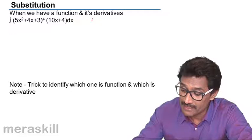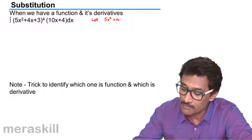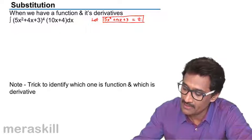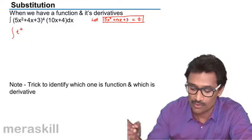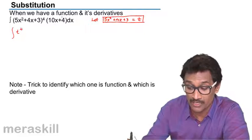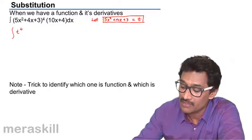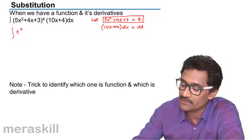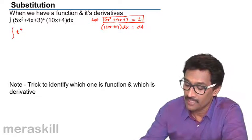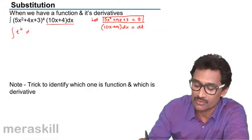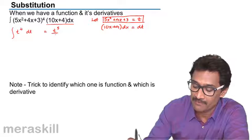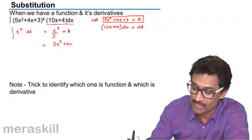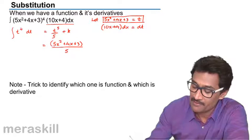Let 5x² + 4x + 3 = t. Taking the derivative on both sides, we get 10x + 4 dx = dt. So this whole expression becomes t^4 · dt, which integrates to t^5/5 + C. Substituting back, we get (5x² + 4x + 3)^5 / 5 plus the constant.